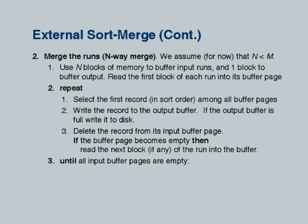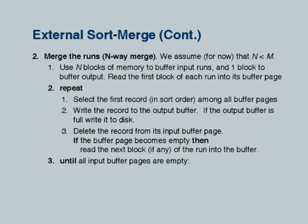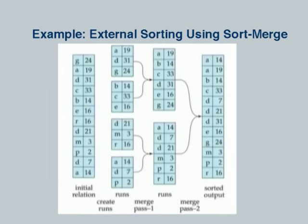Each run is locally sorted, but there are many such runs. To get the final sorted relation, you do a merge process which takes all these runs, finds the minimum element among all runs, outputs it, finds the next minimum, outputs it, and keeps going until all runs are emptied. Let us see this by example — it makes it a lot more clear.